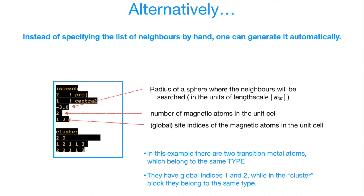So after specifying the atom which is going to be central one, we specify the radius where we're going to look for neighbors and here we specify how many magnetic atoms there are and their indices. So this way the program will search for all the neighbors having these atomic indices in a given radius and the radius is given in the units of length scale.